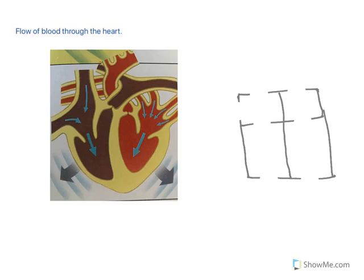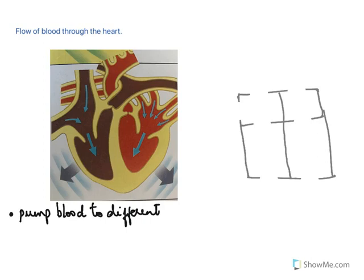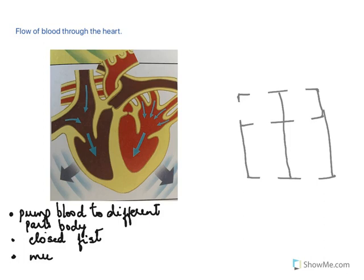Now we will learn the structure or the flow of blood through the heart. First we must know the function of the heart. The main function of the heart is to pump blood to different parts of the body. The size of the heart is as big as your closed fist, and remember a heart is very muscular — it's one of the strongest muscles in our body.